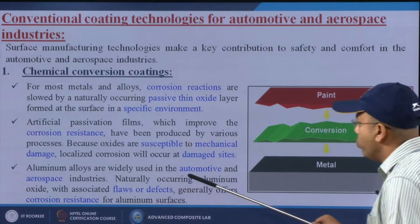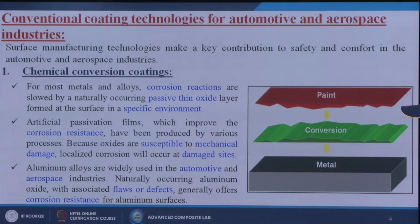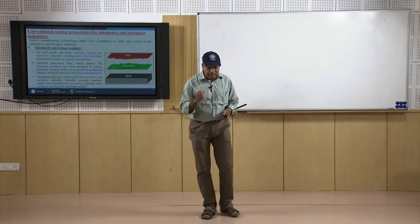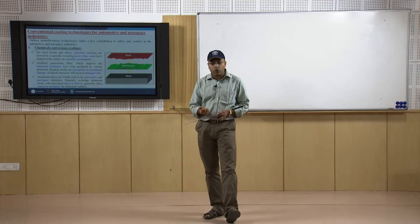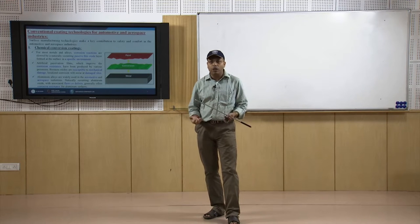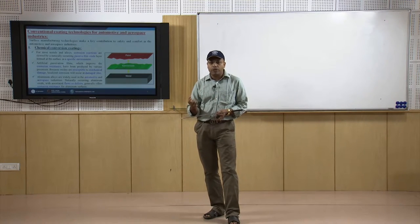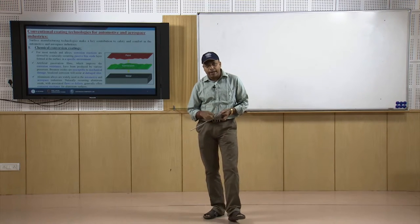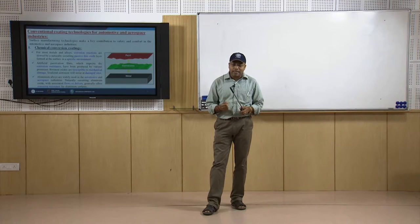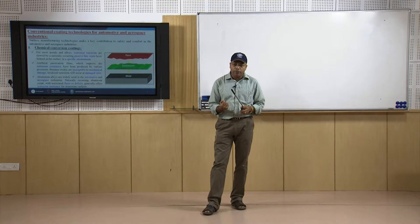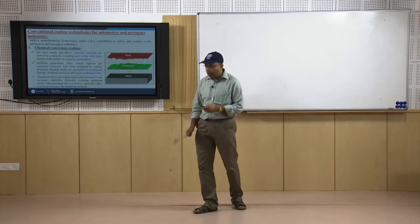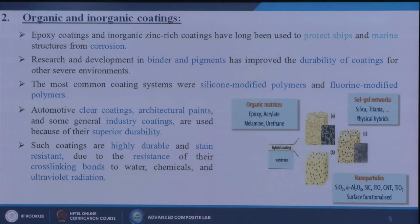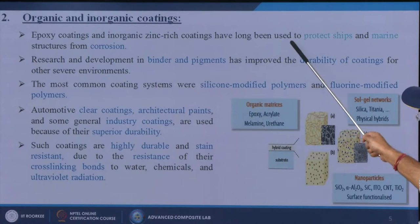Aluminum alloys are widely used in the automotive and aerospace industries. Naturally occurring aluminum oxide with associated flaws generally offers corrosion resistance, but to improve this, rare earth materials like neodymium, chromium, or anti-corrosive materials are added to aluminum to prepare alloys. Nano fillers are added into the aluminum itself so it can act as self-healing — when virgin aluminum is exposed, a reaction automatically forms a protective coating.